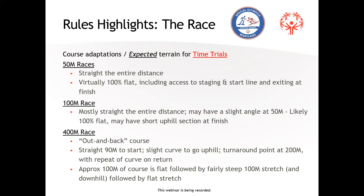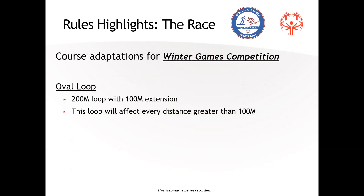For time trials at the operations building on Sunday: the 50-meter is straight the entire course. The 100-meter has a slight uphill with a slight dog-leg to the right at about 75 meters. The 400-meter is an out-and-back over the natural terrain of the operations pathway. If we need to do time trials on Monday instead, we'll be on the actual competition course and those terrain issues shouldn't apply.